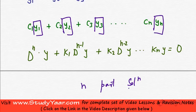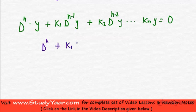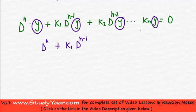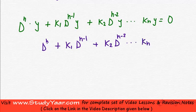So how are you going to find those n particular solutions? Here is the given differential equation. I can write it by factoring out y as: (D^n + k1 D^(n-1) + k2 D^(n-2) + ... + kn) y = 0, since y appears as a common factor throughout.